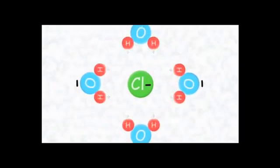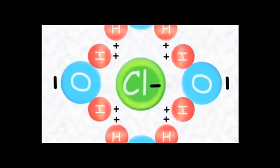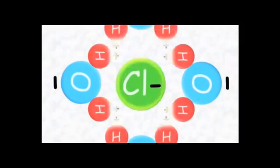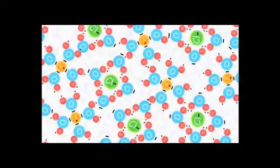The same thing happens in reverse to the chloride ions, which have a negative charge. Each of those is surrounded and isolated by H2O molecules leading with their positively charged hydrogen sides. Each salt crystal is broken into tiny pieces, dissolved by and into the water.